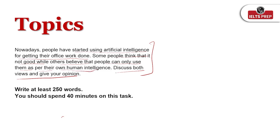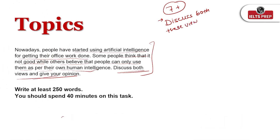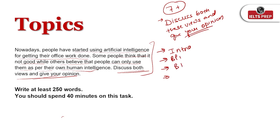Whenever you are asked to do a 'discuss both views and give your opinion' essay, there is a particular structure you need to follow to gain a seven-plus band. The question is asking you to discuss both views and give your opinion. This is one essay type where you will be asked to write an introduction, then body paragraph one, body paragraph two, body paragraph three, and then a conclusion.